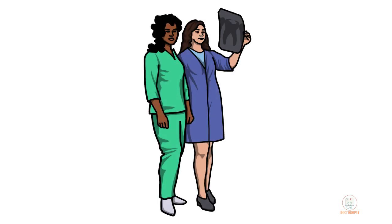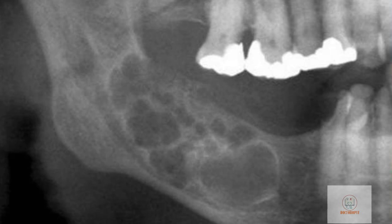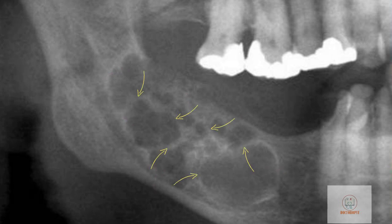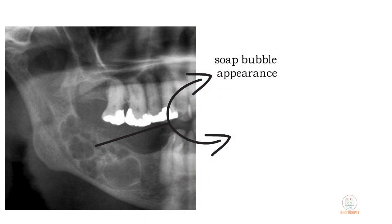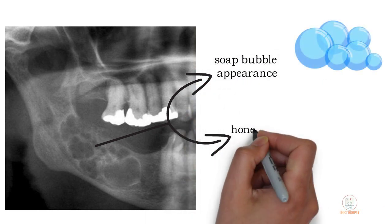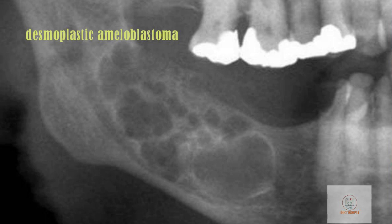On radiographic examination, the most common feature of ameloblastoma is a multilocular radiolucency in the jaw. The tumor exhibits a compartmented appearance with septa of bone extending into the radiolucent tumor mass. This radiolucency is often called soap bubble appearance if the locules are of uneven size, or honeycomb appearance if the locules are of even size. Desmoplastic ameloblastoma is the only histological subtype which may cause radio-opacities within the radiolucent lesion due to areas of bone formation.